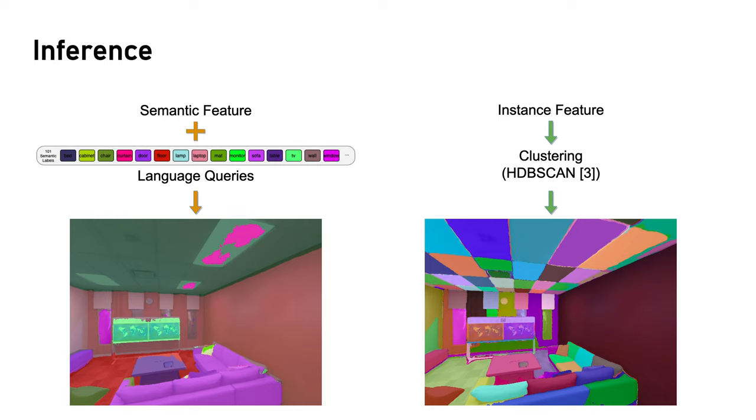For instance segmentation, we use a clustering algorithm to directly segment instance features. In our experiments, we use HDBSCAN. We further fuse the instance segmentation with the semantic segmentation by denoising the semantics inside an instance using majority voting.